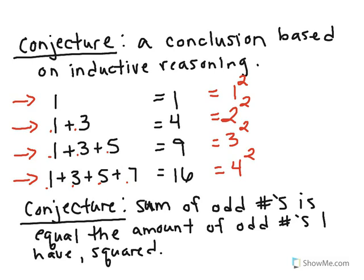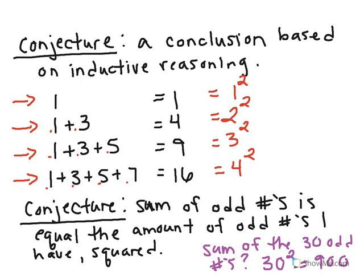So what do you think the value would be if I wanted to know the sum of the first 30 odd numbers? How would I do this if I follow this conjecture? So what I was able to determine here is that the sum of the odd numbers that I'm looking for is equal to the amount of odd numbers I have squared. So in this case, in purple, this is the sum of the first 30 odd numbers. Well, that means if I follow my conjecture, it should be whatever 30 squared is, which is 900. So that is what conjectures are. Conclusions based on inductive reasoning.